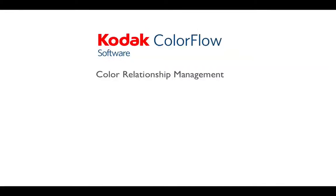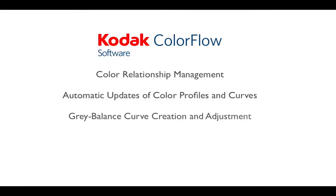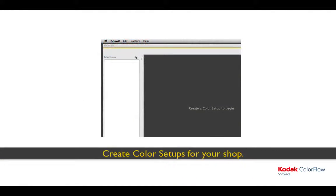Color Relationship Management is what allows ColorFlow to automatically update the correct curves and profiles when a change is needed. ColorFlow software also includes gray balance, curve creation and editing, providing direct support for achieving and maintaining gray balance press work. ColorFlow begins with color setups, which show the color relationships between devices. Your shop will likely have a few different color setups for the variety of ink sets and papers that you work with.